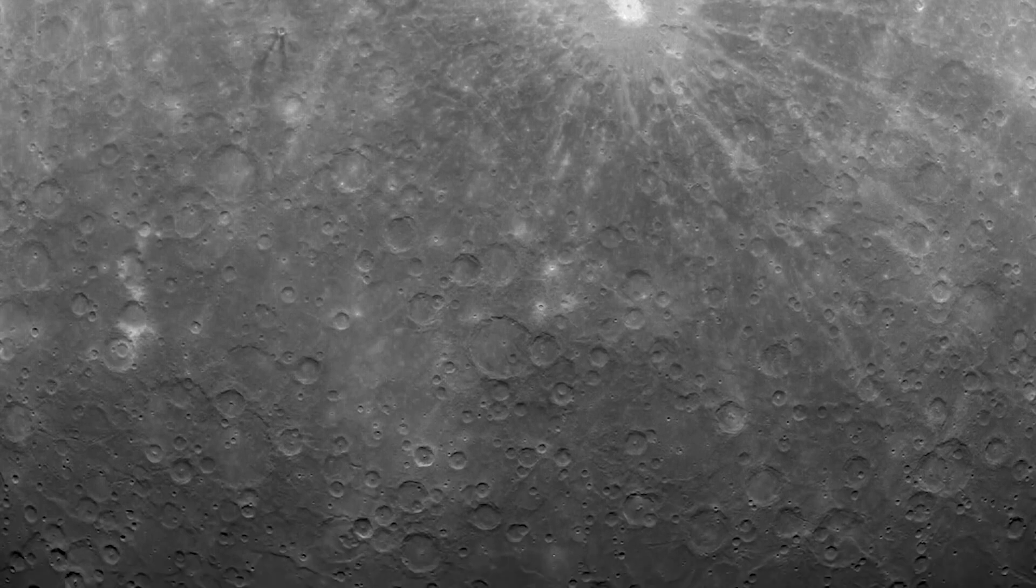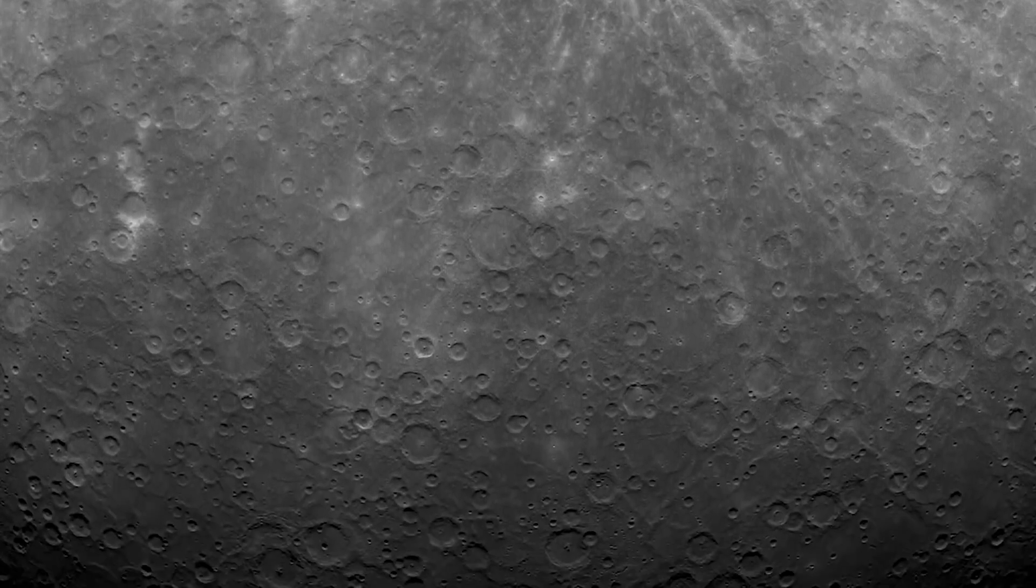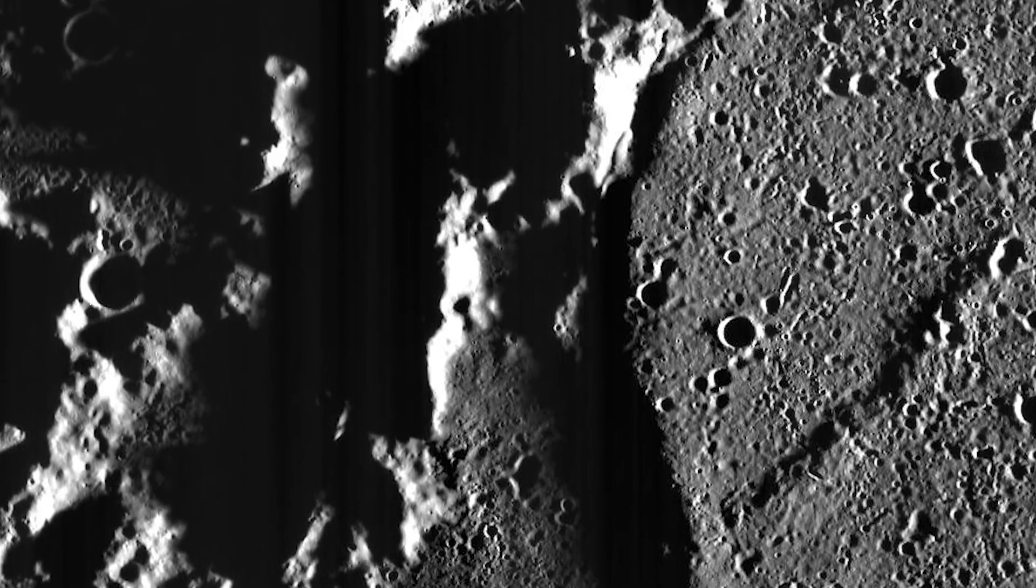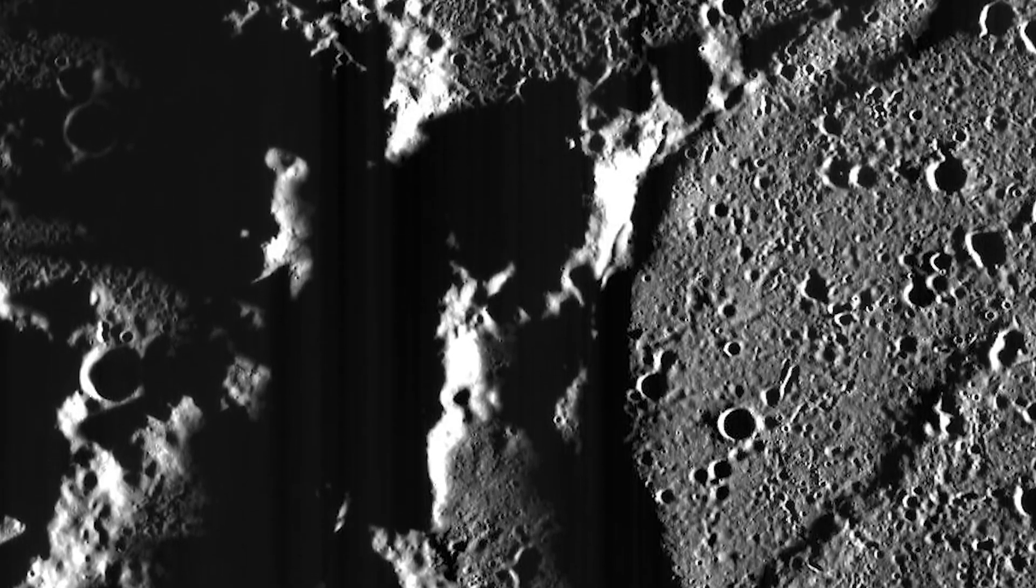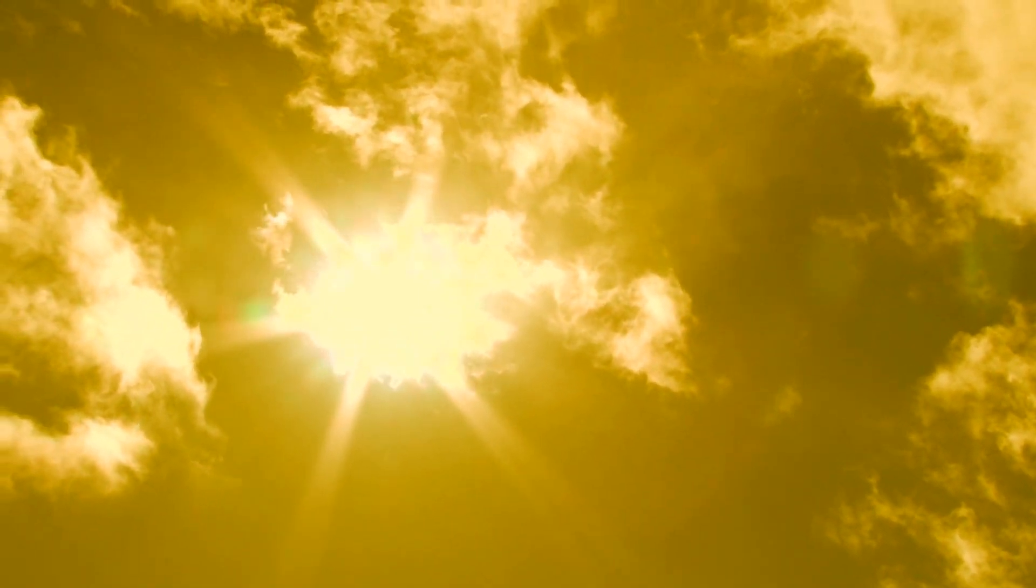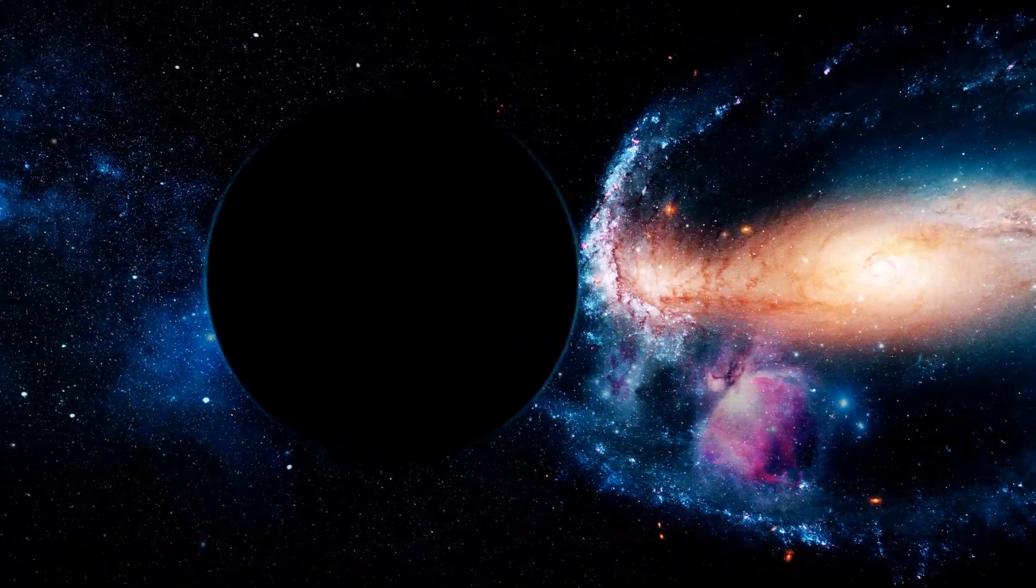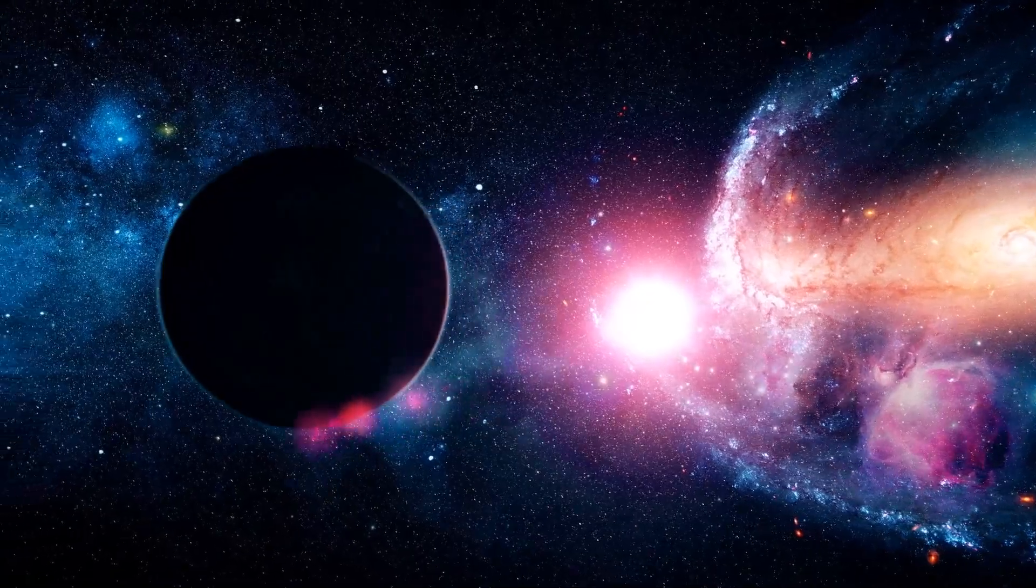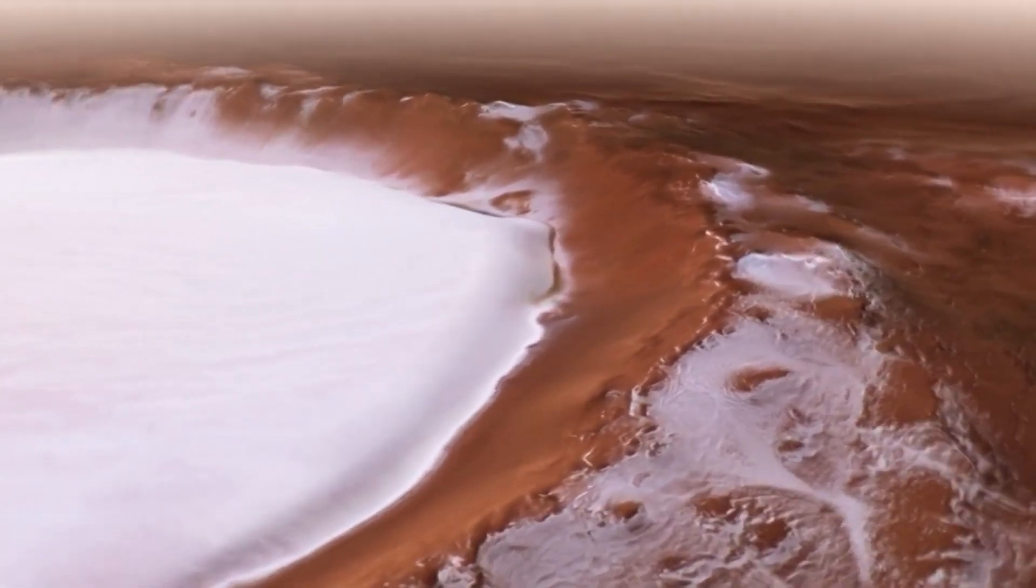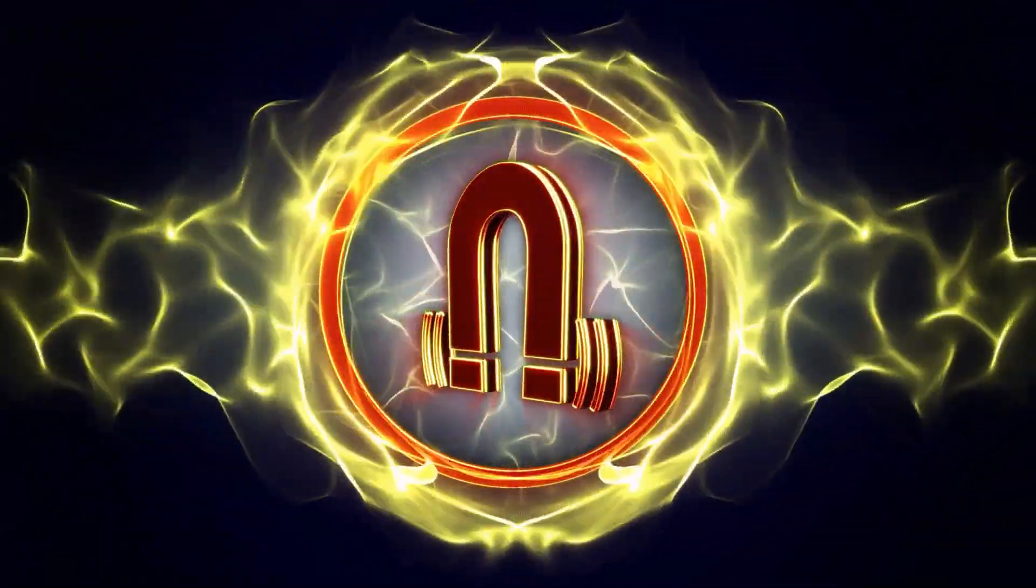Mercury also boasts some of the deepest craters in the solar system, and it's shrinking, causing its surface to crack up like a dried-up riverbed. Its extreme temperature swings will leave you astounded. But that's just the beginning. Stay tuned as we explore its peculiar lack of an atmosphere, its surprising ice-filled craters, and its mysterious magnetic field.